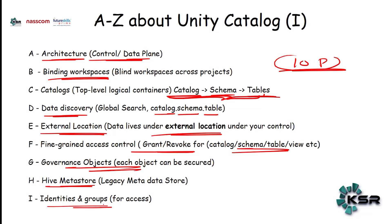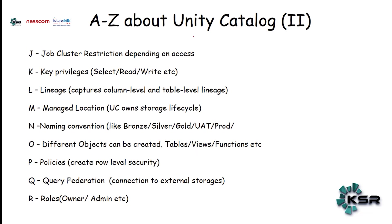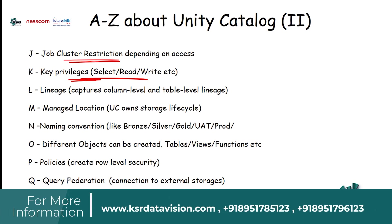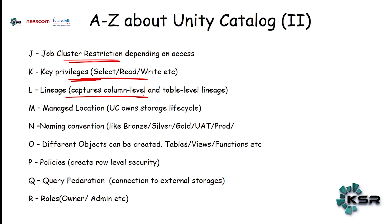We can create multiple identities and groups. If you belong to one project, identities and groups can be created and you can be given access accordingly. Databricks is all about running your cluster and jobs on the cluster — for that also we can provide access, specifying who should have select access, read access, or write access. All of this is managed from the security team. From one space — Unity Catalog — I can give access to any number of people and groups to access the tables, with column-level and table-level connections visible.